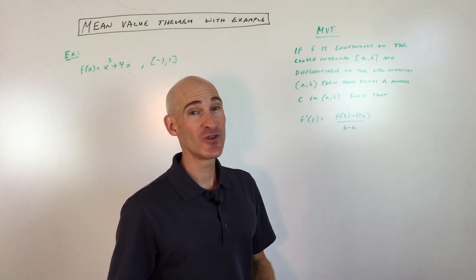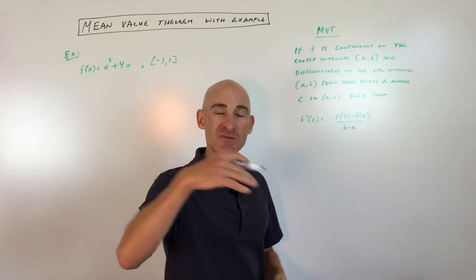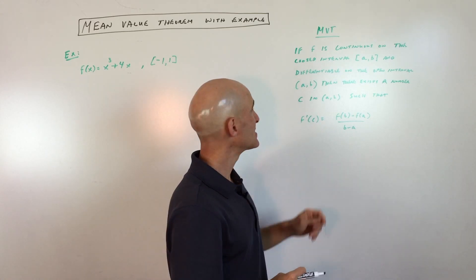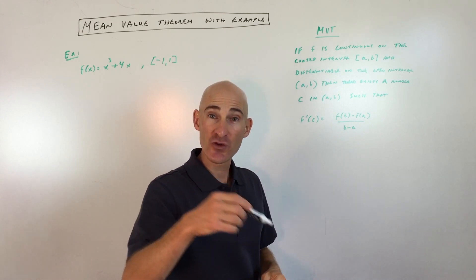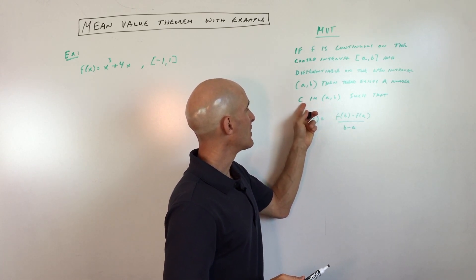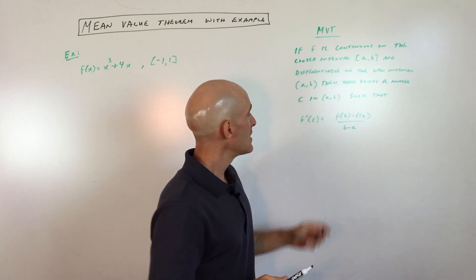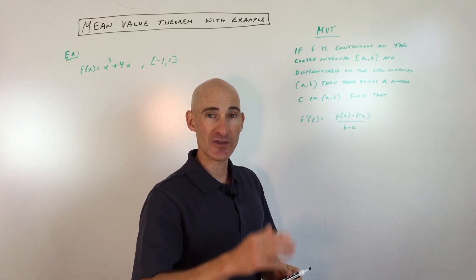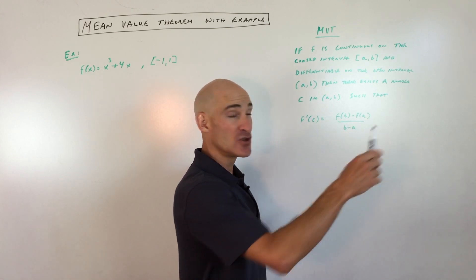So that's a mouthful, so let's break it down. When they say the function is continuous, that just means there are no breaks in the graph — you're not picking up your pencil. Differentiable means the curve is smooth and you can find the derivative at any point along it. The last part says there's an x-coordinate — a c value — between the two endpoints a and b, such that the slope at that c value is the same as the average rate of change between the two endpoints.